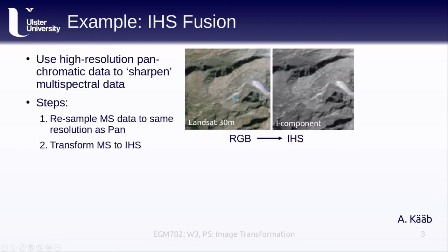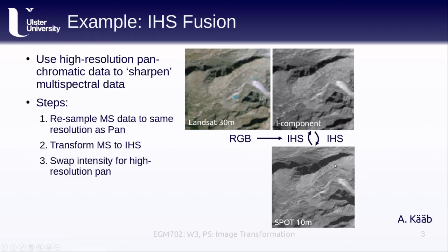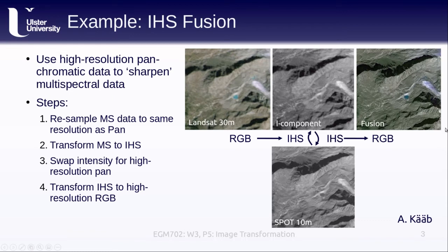Next, we transform the multispectral RGB image to an IHS image. So we have the intensity component shown here. After we have that, we swap out the low-resolution intensity component for the high-resolution panchromatic image. As shown here, we're using a SPOT 10-meter image to sharpen a 30-meter Landsat image. Finally, we transform the swapped IHS image back to RGB, and you can see how the new RGB image appears here much sharper, and we can see a lot more detail in the image. This is because a lot of the detail that we see in an image actually comes from variations in brightness, and we can get by with a lot less detail for the actual color of the different pixels.